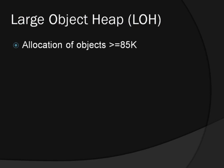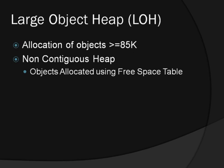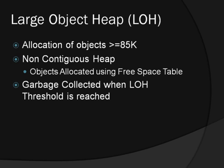Objects larger than 85K are allocated onto a different heap called the large object heap. Because of the overhead of copying large chunks of memory during compaction, the large object heap is non-contiguous and is never compacted. The garbage collector runs when the large object threshold is reached or as part of a full collection.